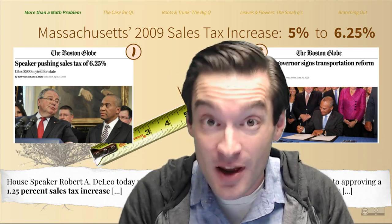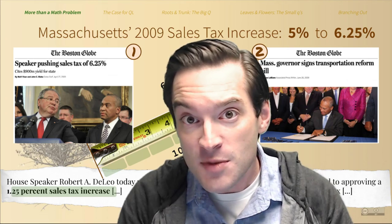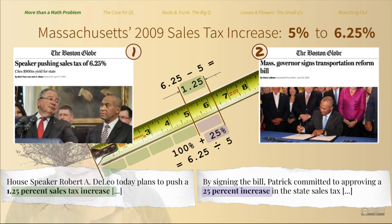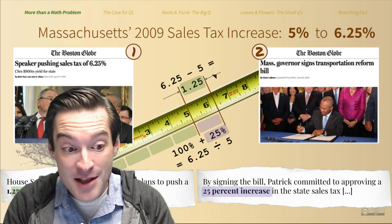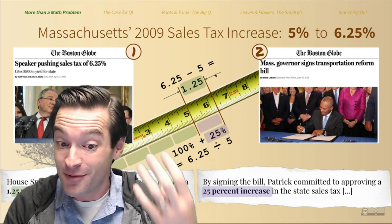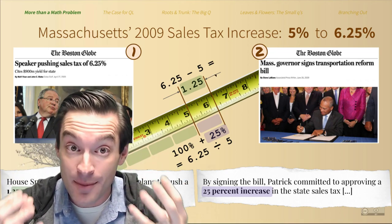In reality, both of the articles are correct, each in its own way, because their authors just made different choices. The absolute difference does a good job of communicating the total amount of the increase itself. The relative difference compares that increase to the previous amount. Each provides one important form of context while obscuring another. And you can imagine how supporters of the new tax might prefer one framing and opponents favor the other, even though they are both talking about exactly the same thing.